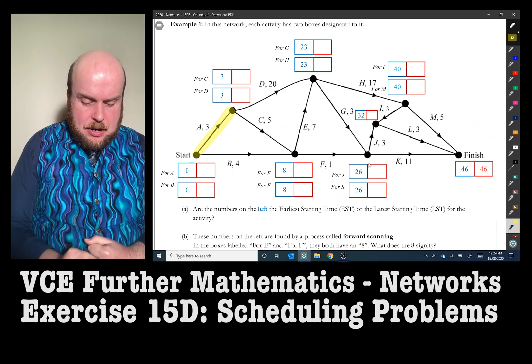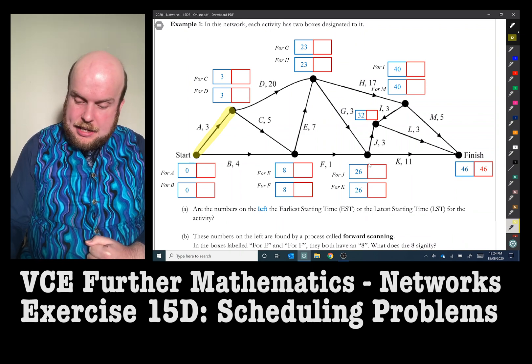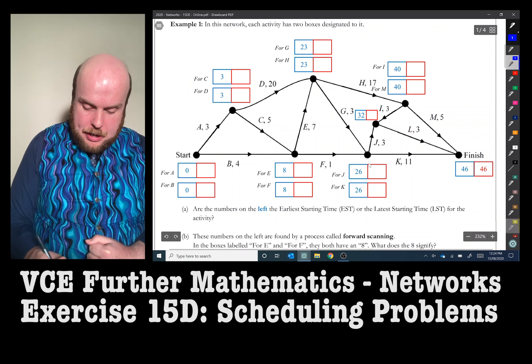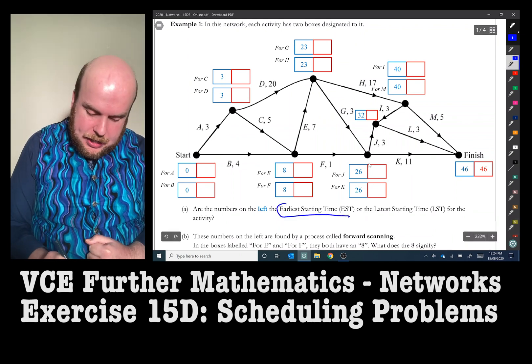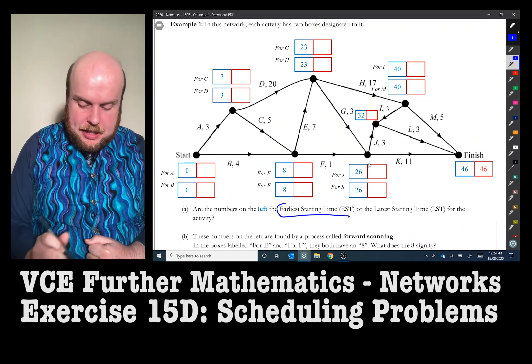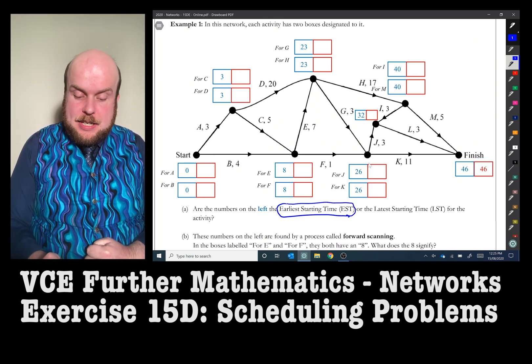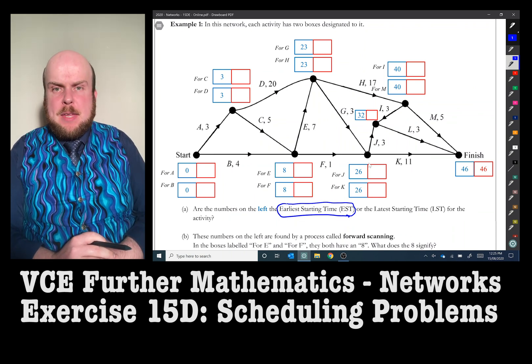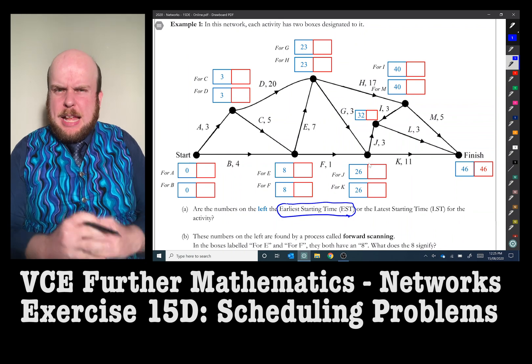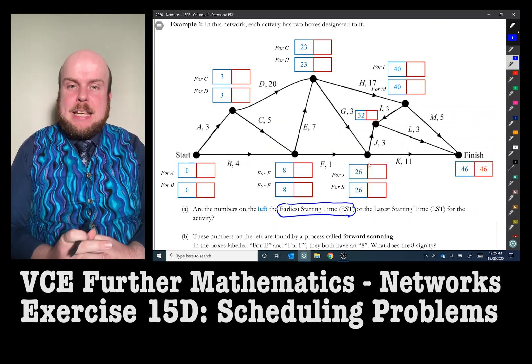And so I would suggest strongly that the numbers on the left or the blue numbers, apologies for my colorblind audience there, will be the earliest starting time. Because it seems to imply, like if I look through D, the earliest starting time seems to do three plus 20 is 23. Might be a little bit more complicated than that, but this is what I think it would mean. So the earliest starting time would be the numbers on the left.